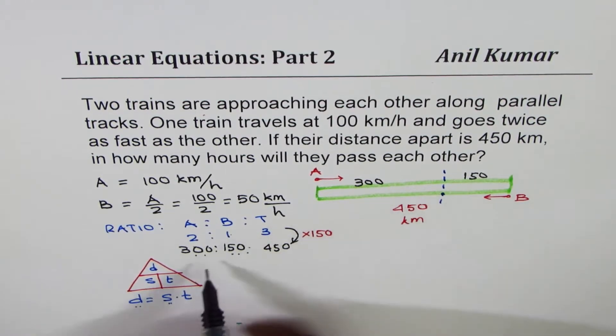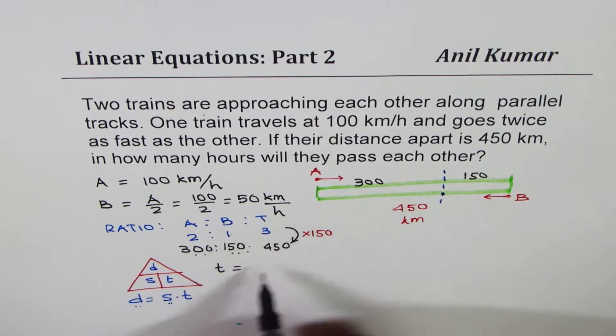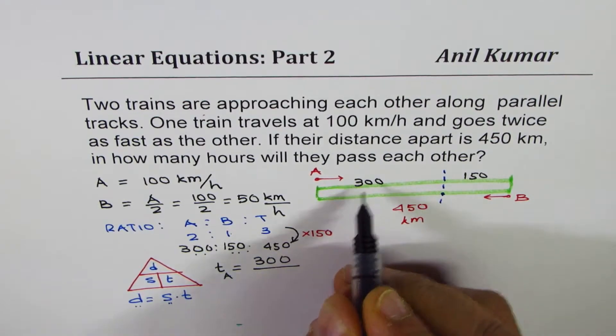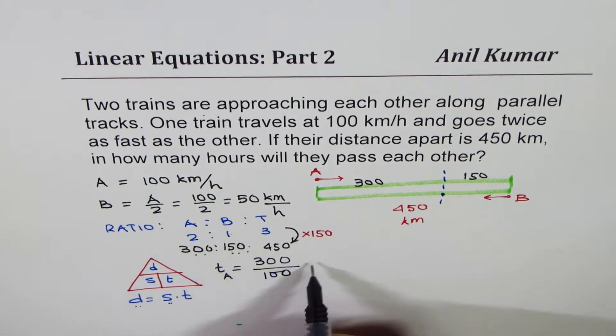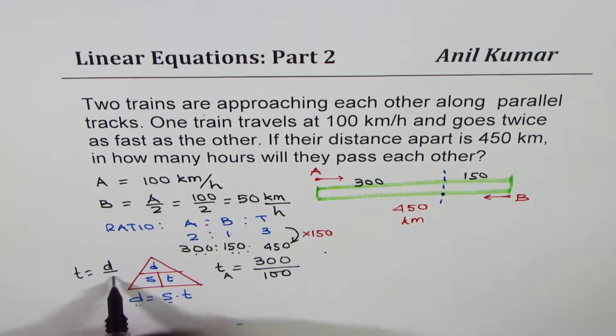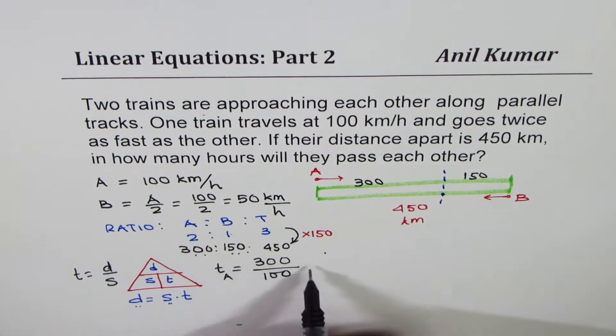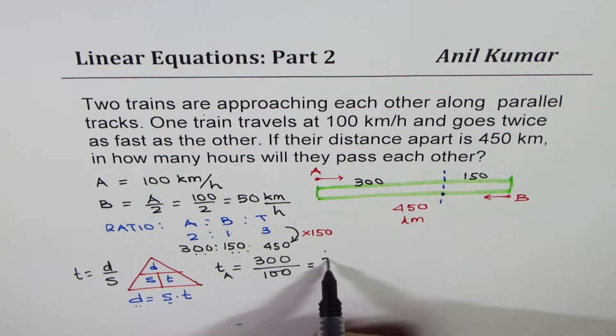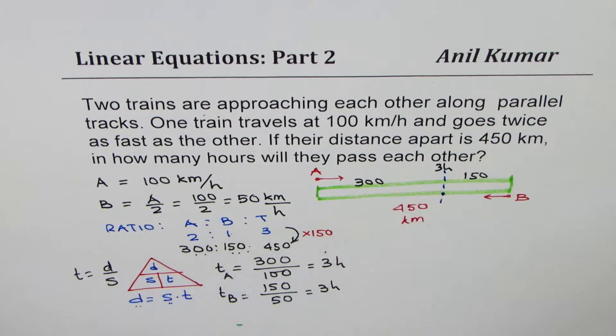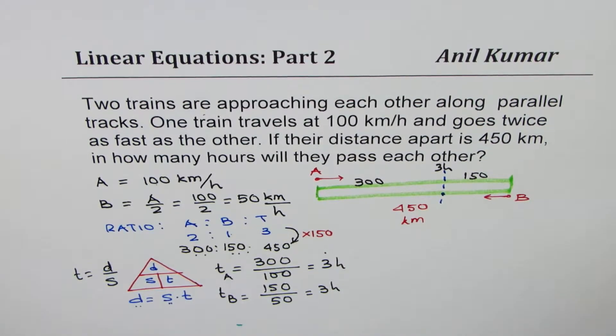Now once we know the distance, we can find time. So time is distance—let's say if we take for A, time for A, distance is 300 divided by speed, which is 100. We have used time equals distance over speed. And we are working for A, we get time as equal to 3 hours. If you do for B, 150 is the distance and the speed is 50. You still get 3 hours as expected, same time. So 3 hours. So likewise, you could actually use ratios and solve this question.